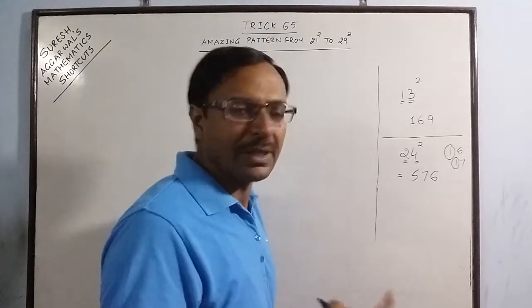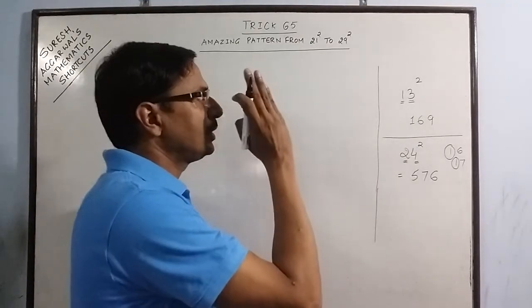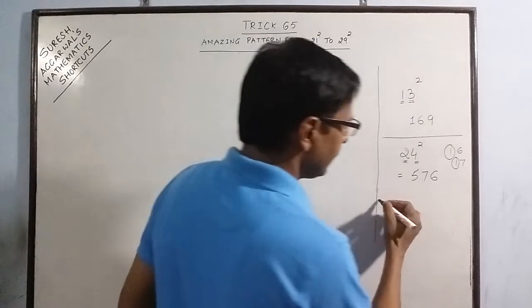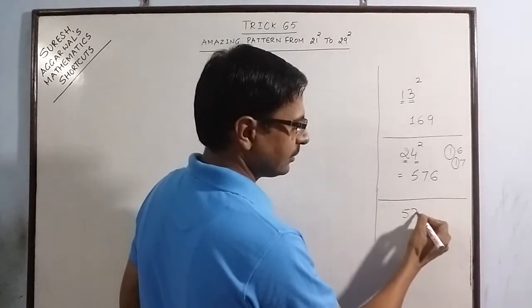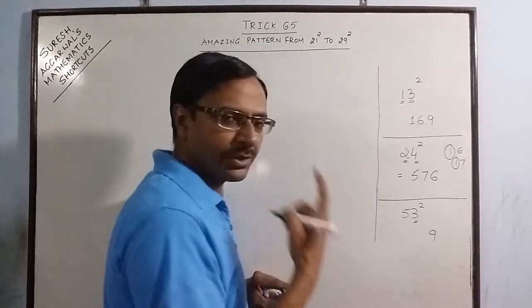One final example. Then we will get on with this squaring 21, squaring 22 and up to 29. Say we have square of 53. Now 3 square is 9. Single digit. Retain it.